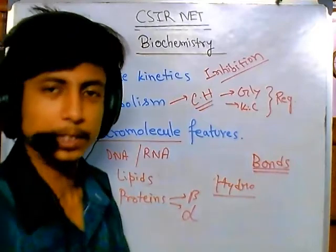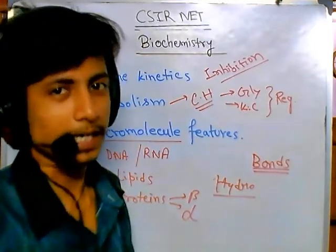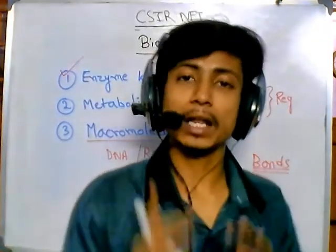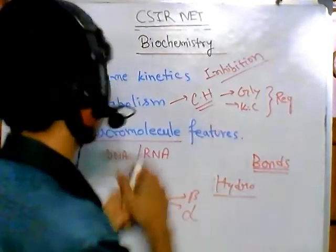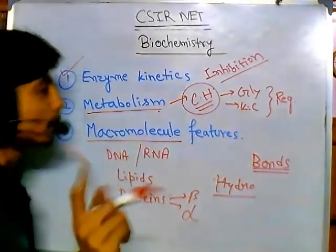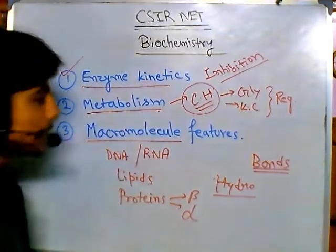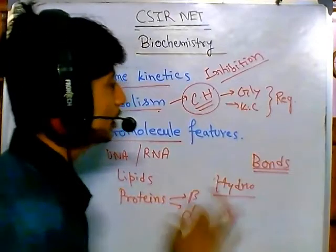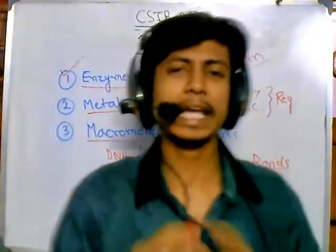Biochemistry is something they will never overlook — they ask many questions from biochemistry in each session of the CSIR NET exam. For that reason, understand biochemistry very well. Metabolism is a huge part, but focus more on carbohydrate metabolism. You should have a clear understanding of how enzymes function, and I've given you the idea on the macromolecule part.